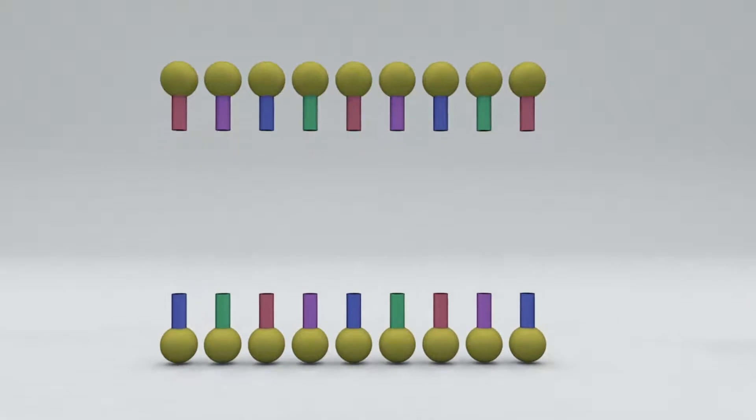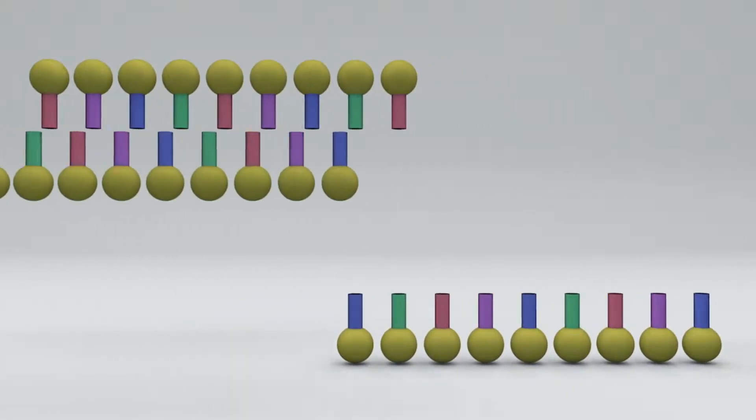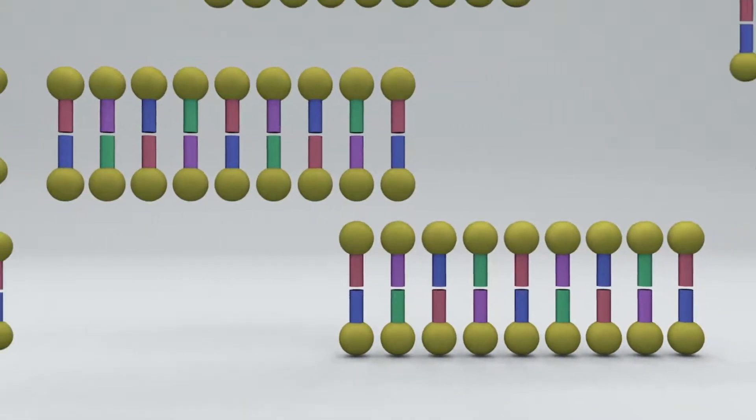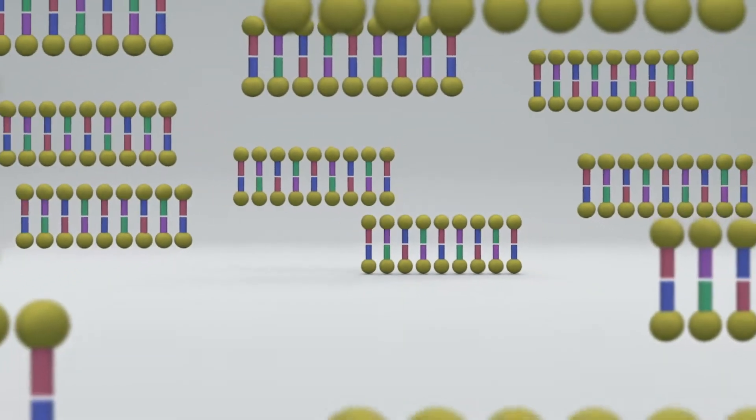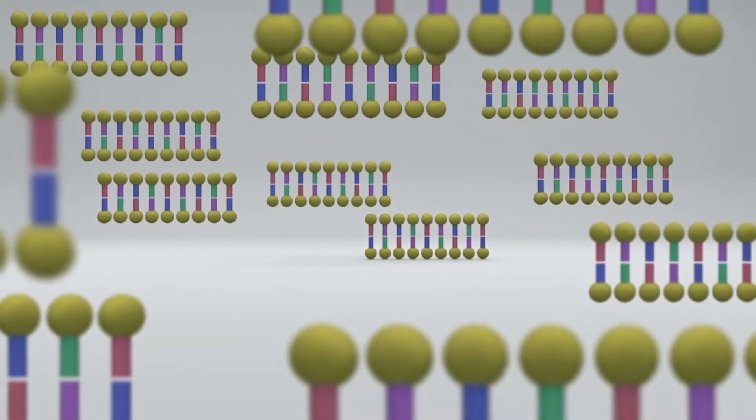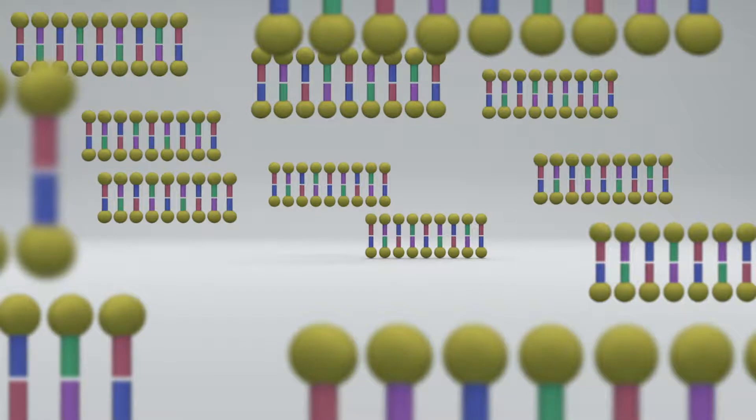Once the reagents recognize the target pathogen, the isothermal amplification chemistry repeatedly replicates the small section of RNA or DNA, going from a few target molecules up to a billion in a matter of minutes.